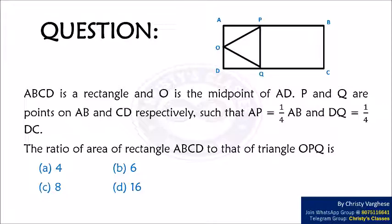The ratio of area of rectangle ABCD to that of triangle OPQ is: options A 4, B 6, C 8, and D 16.